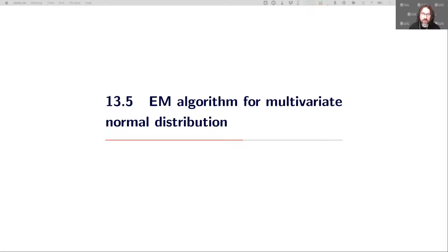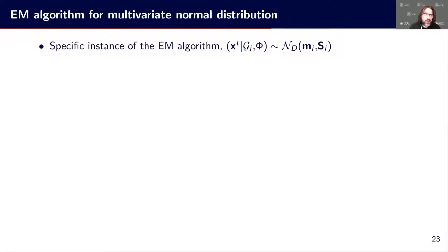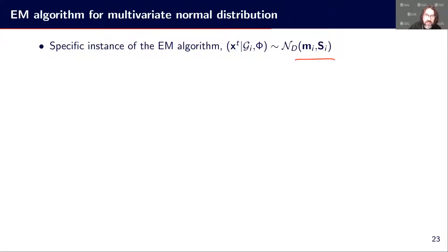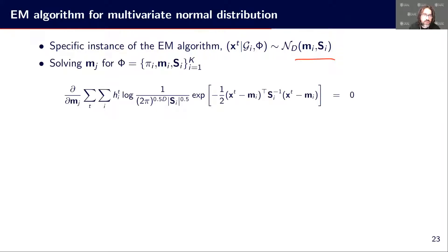Now we will see the development of the EM algorithm for multivariate normal distribution. We start with the instance where the parameters of the distribution of X are following a multivariate normal distribution for each group. We have Mi and Si, which describe the distribution — the mean vector and the covariance matrix associated to group Gi.